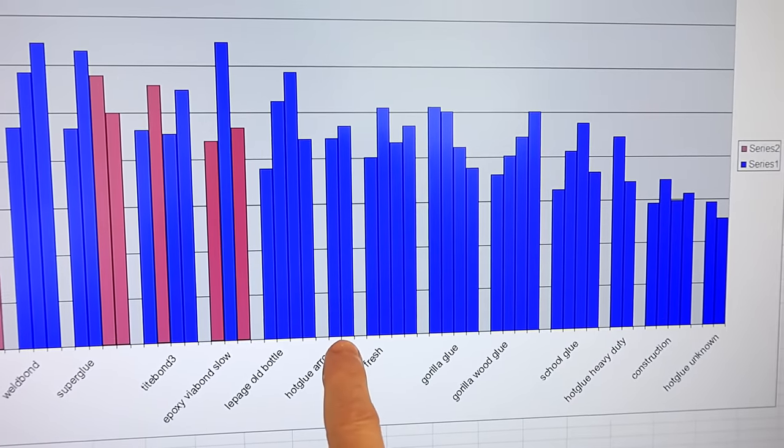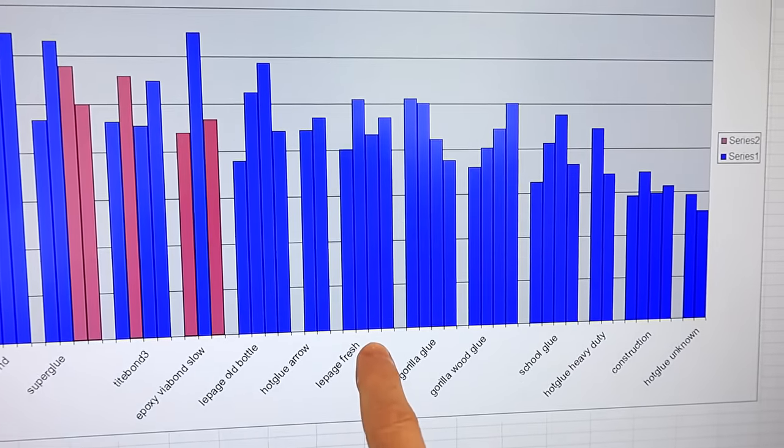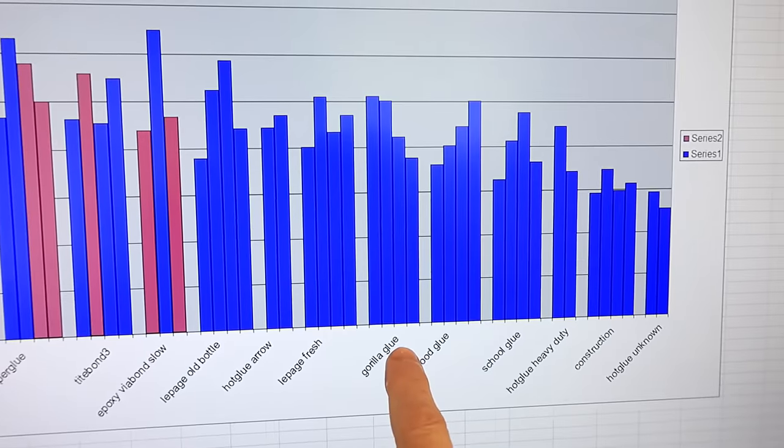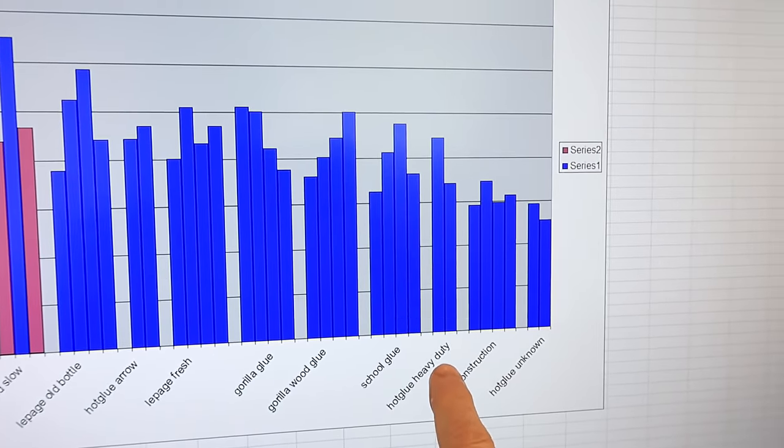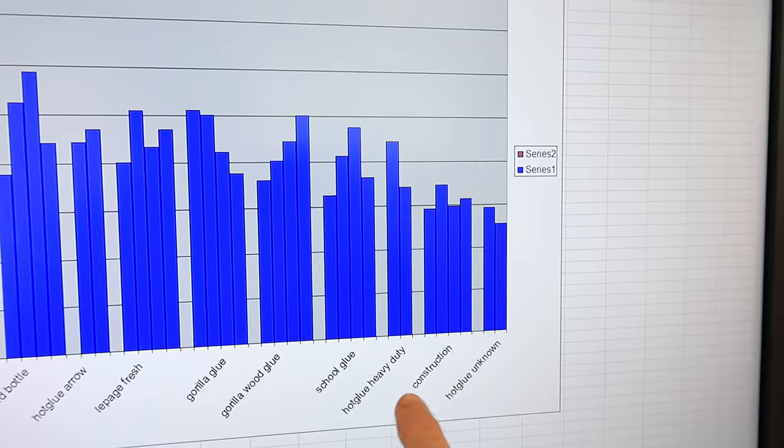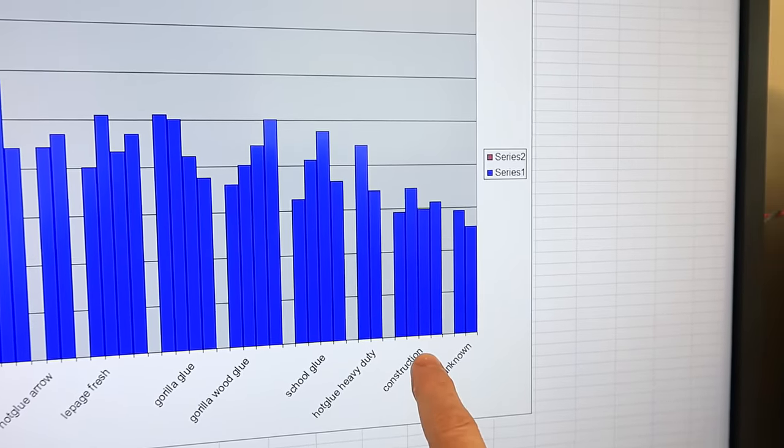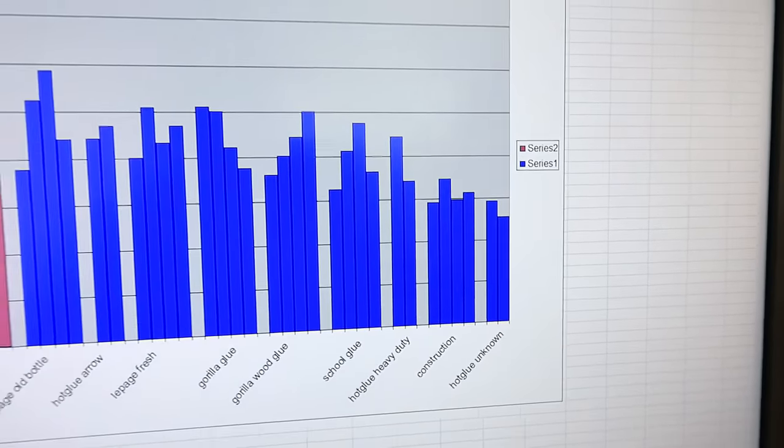The Aero Brand Hot Glue, although only two samples, a fresh LePage bottle, Gorilla Glue, Gorilla Wood Glue, School Glue, Heavy Duty Hot Glue, supposedly heavy duty. The construction adhesive was the second weakest, and the weakest was some random hot glue I had in my glue gun.